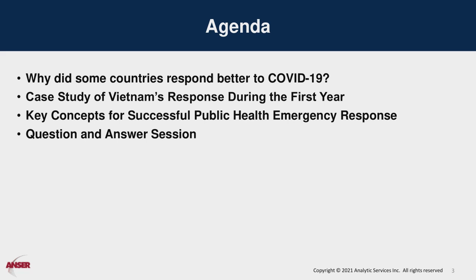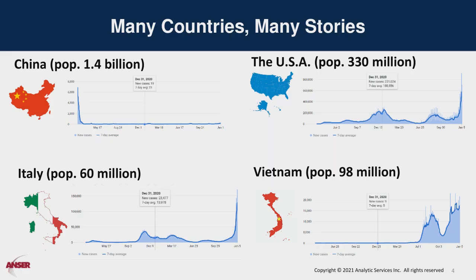Today, we will investigate why some countries had a more effective response to COVID-19 in the first year of the pandemic, using a case study of Vietnam to understand key concepts for successful public health emergency response.